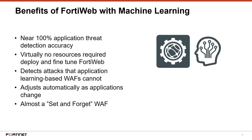With machine learning, FortiWeb is able to deliver near 100% application threat detection accuracy with virtually no resources required to manage it. FortiWeb can now detect attacks that other WAF vendors can't and adjust automatically to application changes without any intervention. AI-based machine learning for FortiWeb creates nearly a set-and-forget web application firewall that doesn't sacrifice accuracy for ease of management.